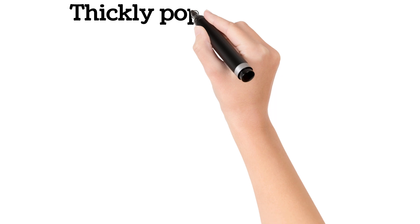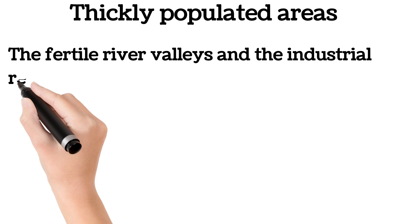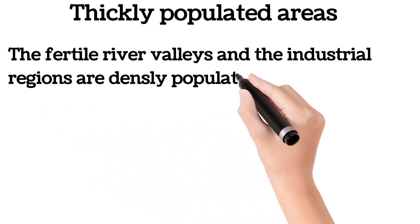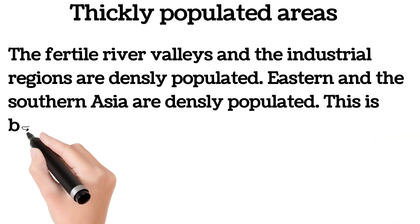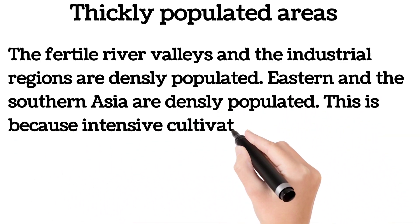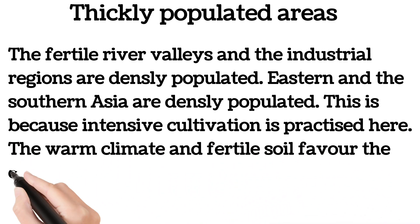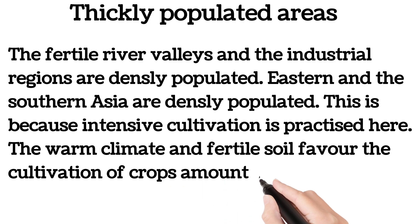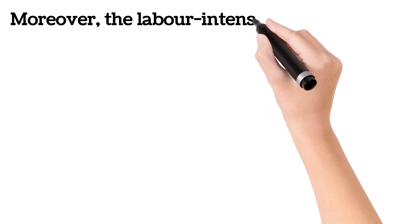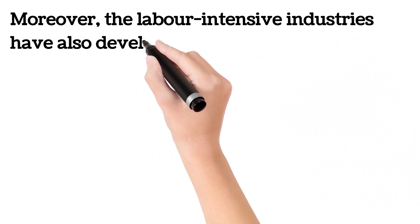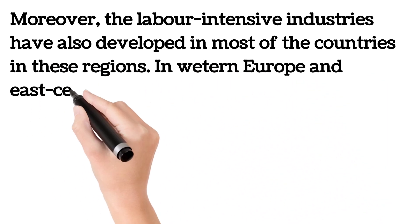Thickly populated areas: the fertile valleys and industrial regions are densely populated. Eastern and Southern Asia are densely populated because intensive cultivation is practiced here. The warm climate and fertile soil favor the cultivation of crops throughout the year. Moreover, labor-intensive industries have also developed in most of the countries in these regions.